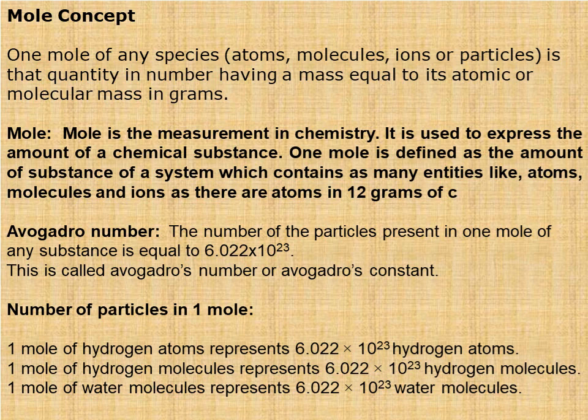One mole of hydrogen atoms = 6.022 × 10²³ hydrogen atoms. One mole of hydrogen molecules = 6.022 × 10²³ hydrogen molecules. One mole of water molecules = 6.022 × 10²³ water molecules. Every species — atoms, molecules, ions, or particles — has the same Avogadro's number per mole.